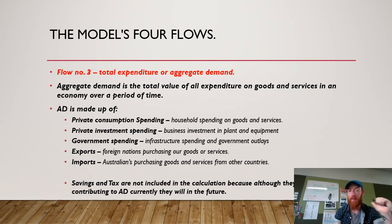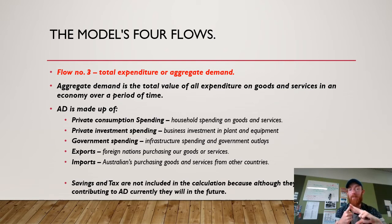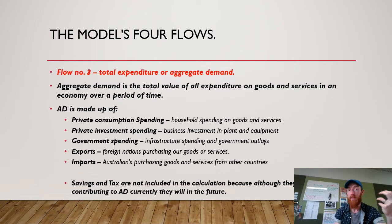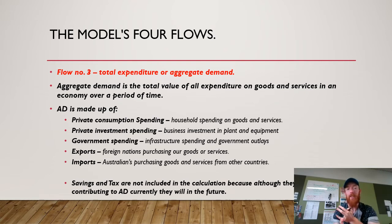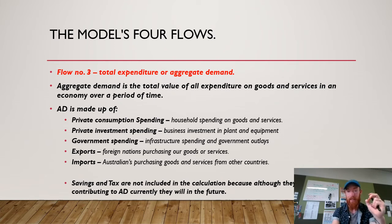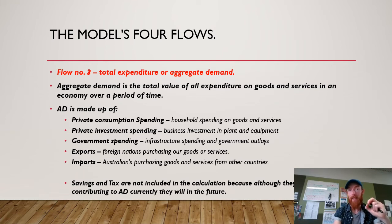Aggregate demand is the total value of all expenditure on goods and services in an economy over a period of time. It's made up of private consumption spending — all household spending on goods and services — private investment spending — business and consumer investment in plants, equipment, and large-scale assets — government spending including infrastructure and outlays, exports — foreign nations purchasing our goods and services — and imports — Australians purchasing goods and services from other countries. Savings and tax are not included in this calculation because, although they're not contributing to aggregate demand currently, they will in the future.